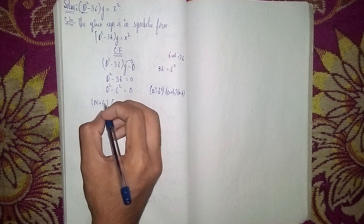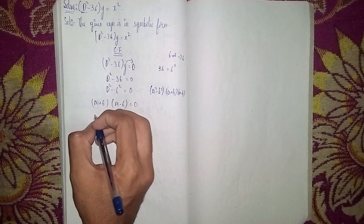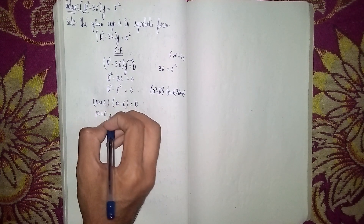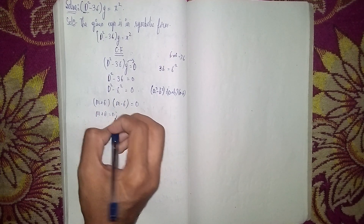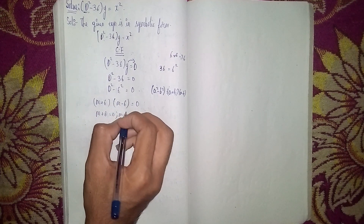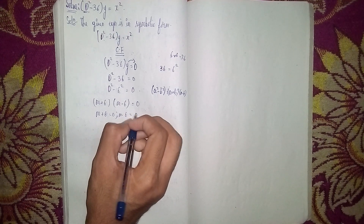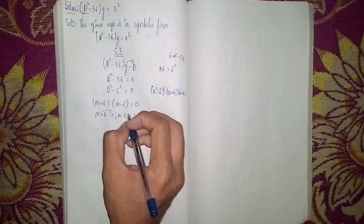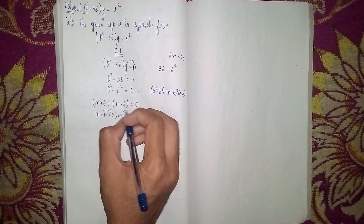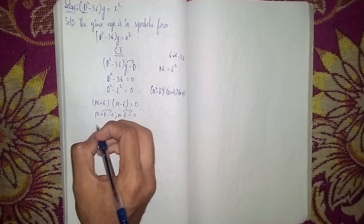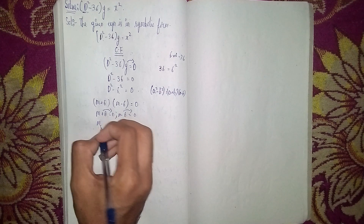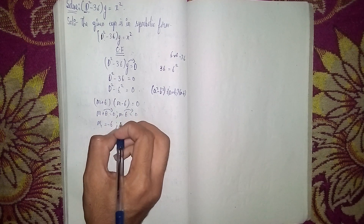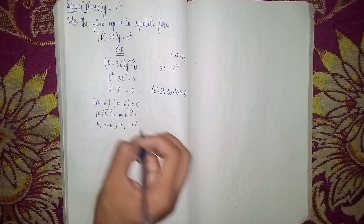Setting each factor equal to zero: M + 6 = 0 gives M₁ = -6, and M - 6 = 0 gives M₂ = +6.